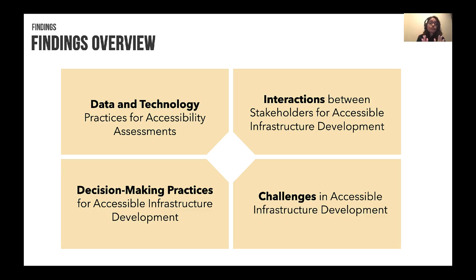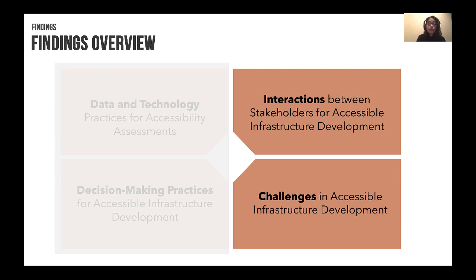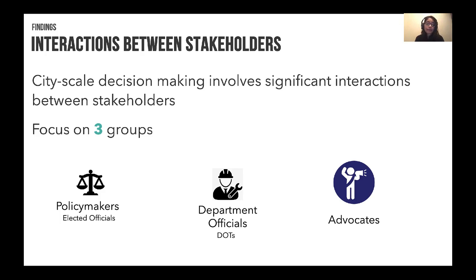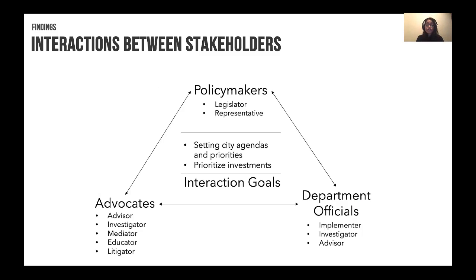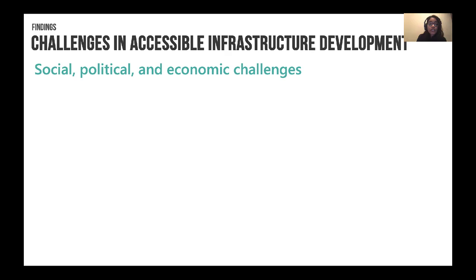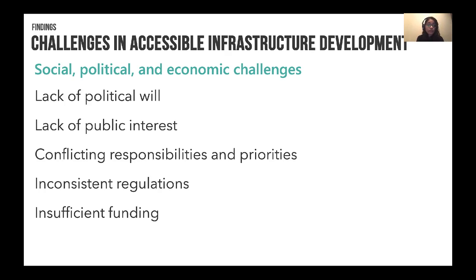Across these stakeholder groups, we had findings across four categories. Today we focus on two: interactions between the different stakeholders and the challenges that occurred, more specifically the socio-political challenges. City-scale decision-making happens amongst three primary groups — policy makers, department officials, and advocates — who all come together for two main interaction goals: setting city agendas and priorities, as well as prioritizing investments. During this process, we found several social, political, and economic challenges, such as lack of political will, lack of public interest, conflicting responsibilities and priorities, insufficient funding, and inconsistent regulations.